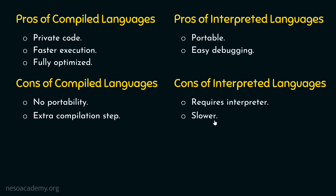Unlike a compiled language, you do not get an executable from an interpreter that you can run multiple times faster. Every time you want to run your code, you need to provide it to the interpreter, hence it is very slow. The third disadvantage is public code. Interpreted languages require you to provide source code, which means your code is public — you are not providing an executable, you are providing the source code to someone in order to run it.